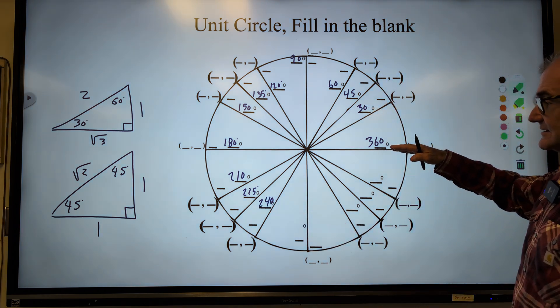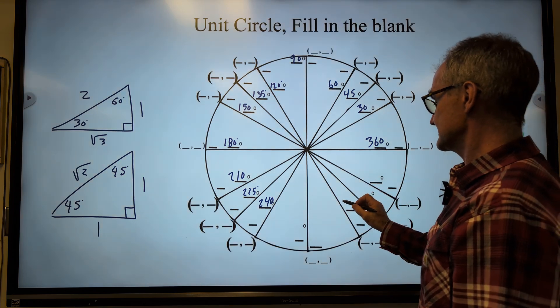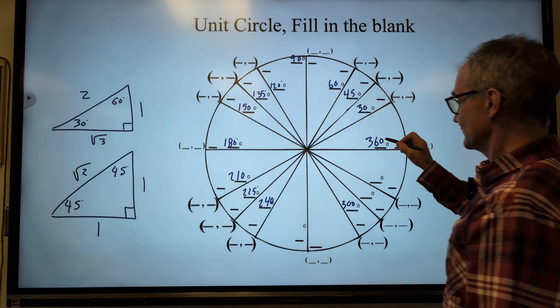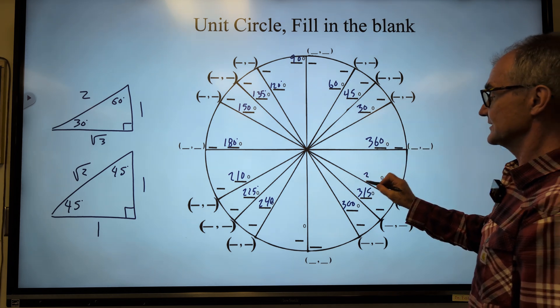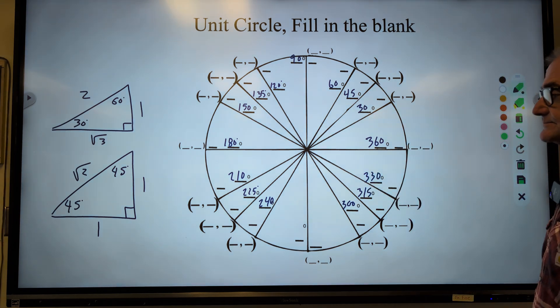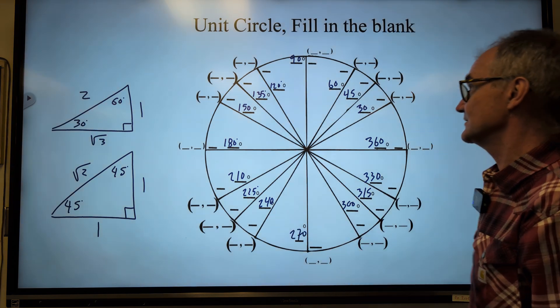Then over here, same thing. This is going to be 60 below 300, 60 to give me 300. 45 below at 315. 30 below to be 330 degrees. And then this is 270 and the 180.